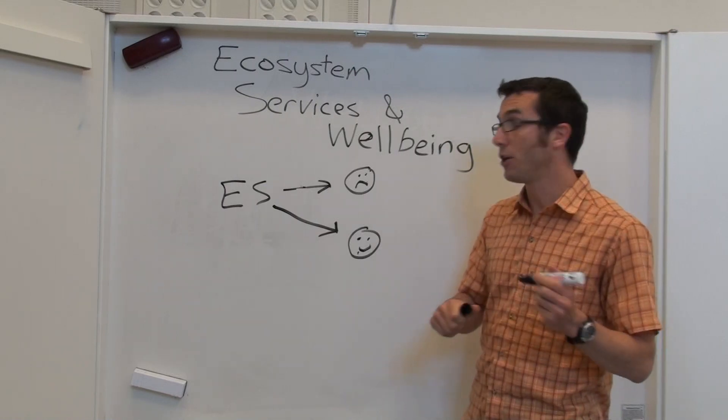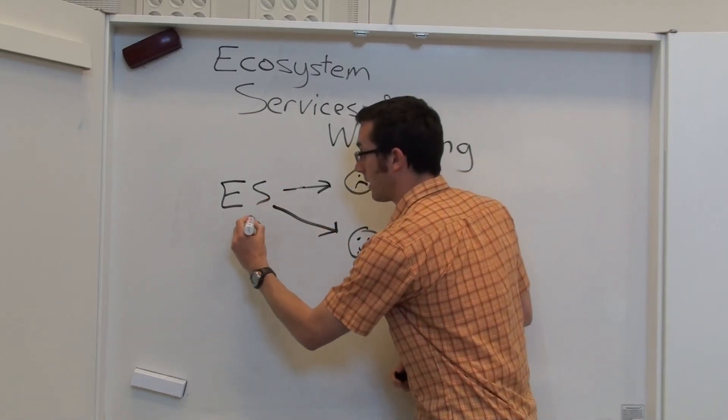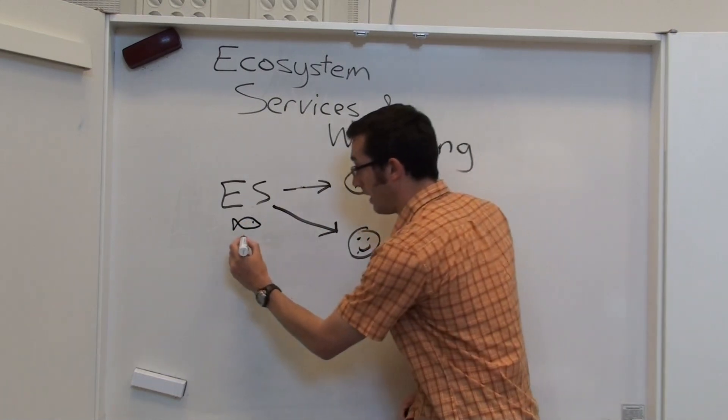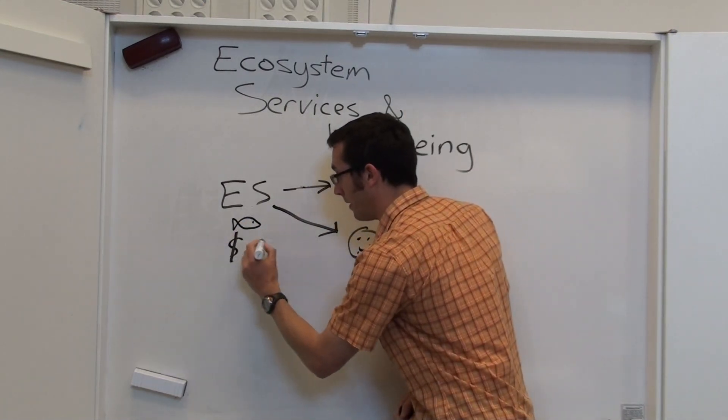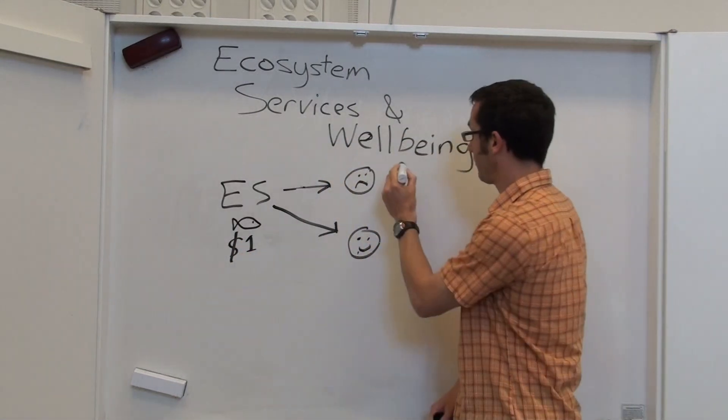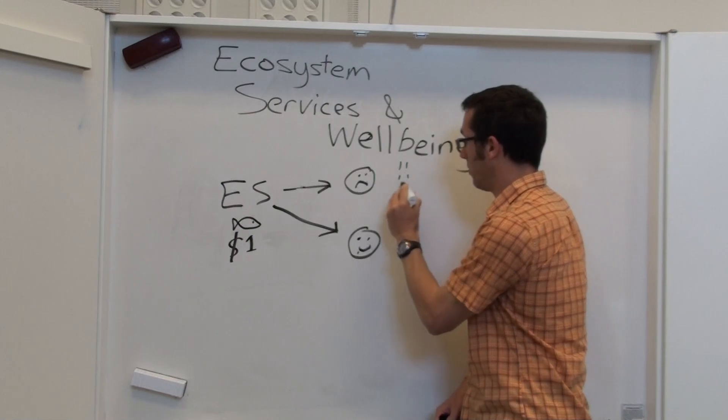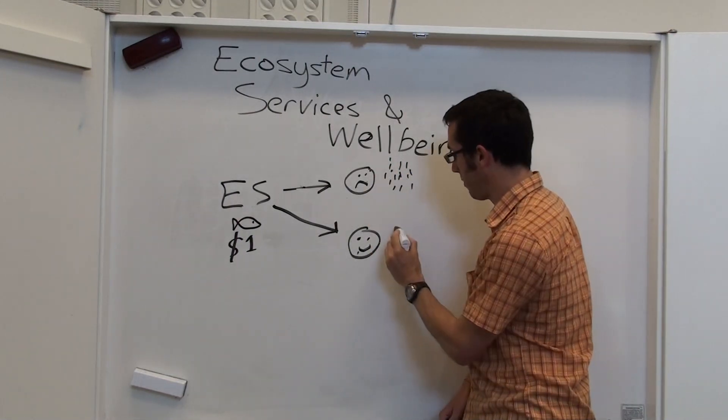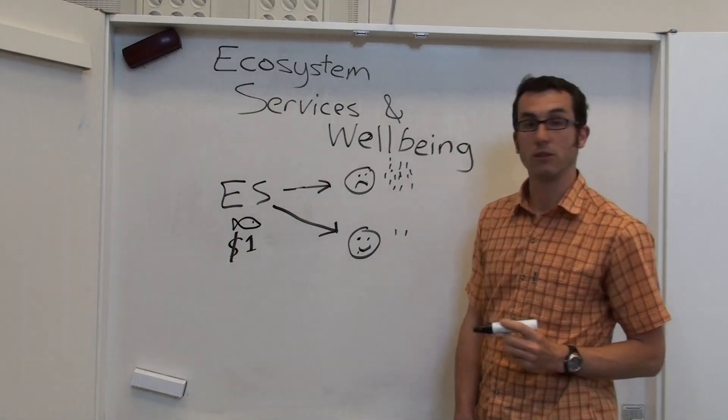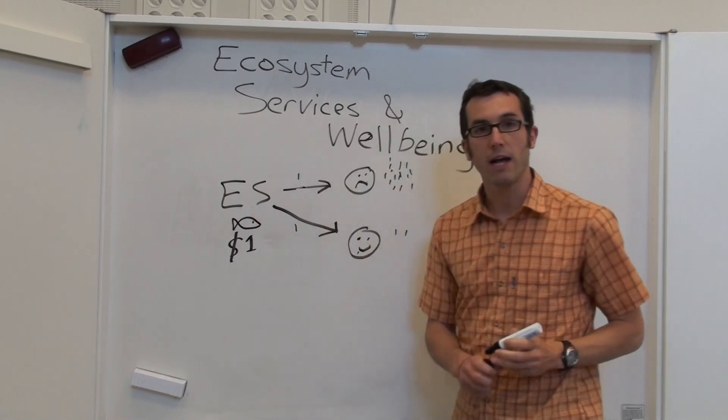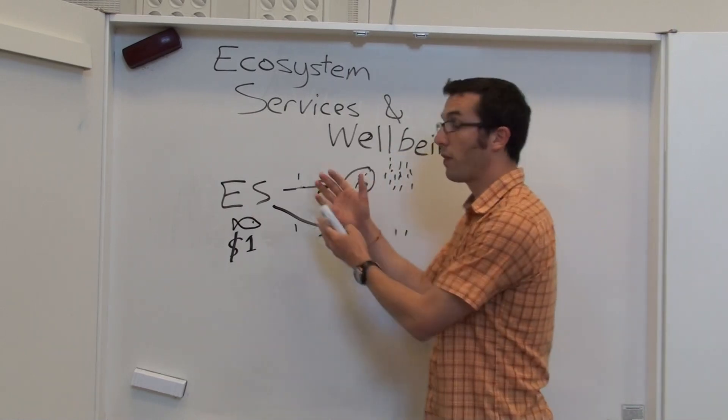So let's imagine the value of a fish that comes out of this ecosystem service. Let's say that this fish is worth one dollar, and we can imagine that here we have a very rich person who has lots of money and plenty to eat, and a very poor person who only has very little. You can imagine that that ecosystem service, the same value, the same quantity of fish, worth the same amount...